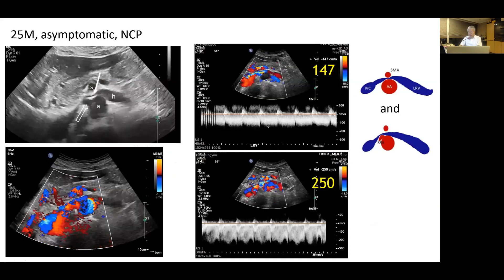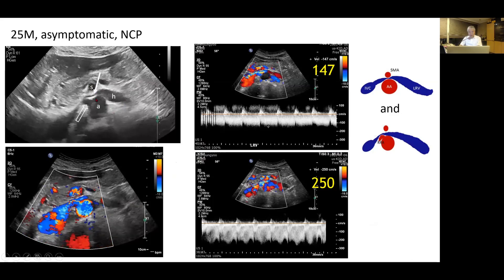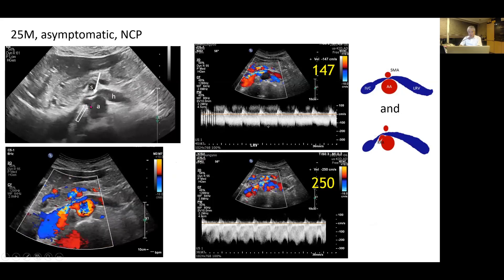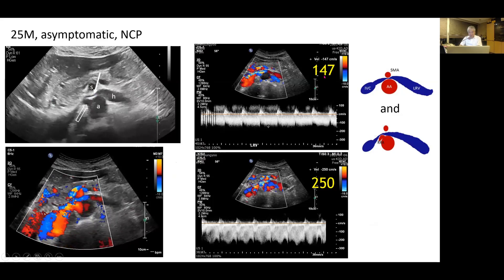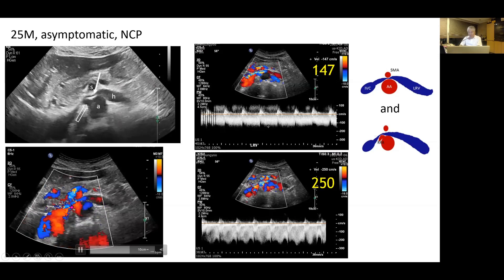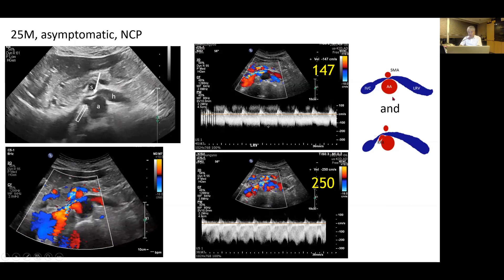There are also combinations of those types. In a 25-year-old asymptomatic man, the left renal vein is slightly compressed between the aorta and superior mesenteric artery and also posteriorly by the origin of the right renal artery. Peak flow velocity in one area was 147 cm/s, while in another area it was 250 cm/s. The pattern in this patient is a combination of Type 1 and Type 2 Nutcracker.